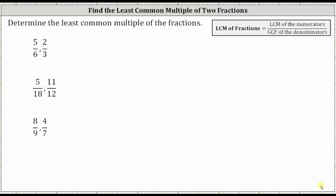This lesson will show how to determine the least common multiple of fractions. The least common multiple of a set of fractions is equal to the fraction where the denominator is the greatest common factor of the denominators, and the numerator is the least common multiple of the numerators.